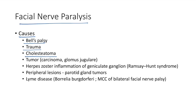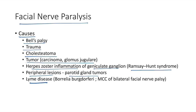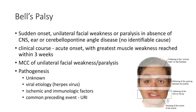Causes of facial nerve paralysis include Bell's palsy, trauma, cholesteatoma, tumors like carcinoma and glomus jugulare, herpes zoster inflammation of the geniculate ganglion (Ramsay Hunt syndrome), peripheral lesions like parotid gland tumors, and Lyme disease caused by Borrelia burgdorferi. The most common cause of bilateral facial nerve palsy is Lyme disease.